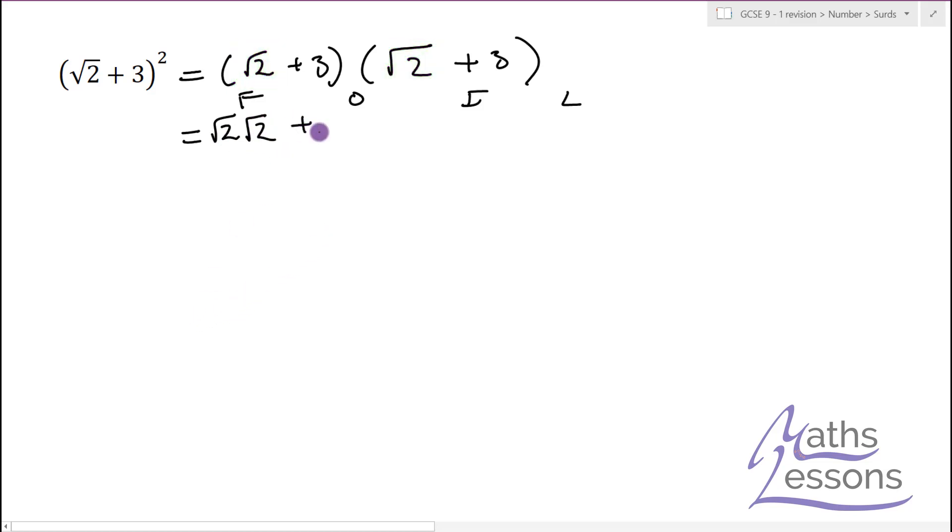Plus we've got the outer two things, so it's going to be 3 times √2. And we've got the inner two things here, 3 times √2, plus 3 times 3 is 9.